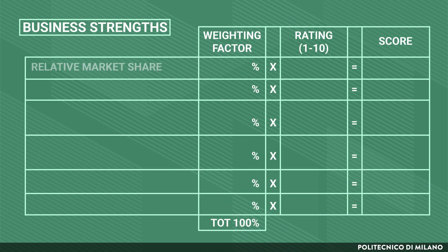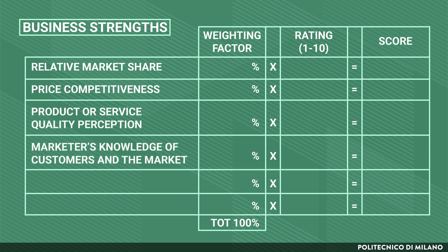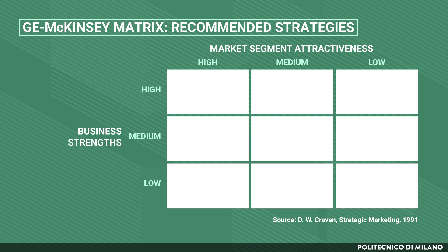Similarly, relative SBU positioning and its trends are calculated as a weighted average of the following parameters: relative market share, price competitiveness, product or service quality perception, market knowledge of customers and the market, sales effectiveness, and geographical coverage. The crossing of industry attractiveness and business trends allows to position a given SBU in one of nine cells, for which specific guidelines or recommended strategies are provided.